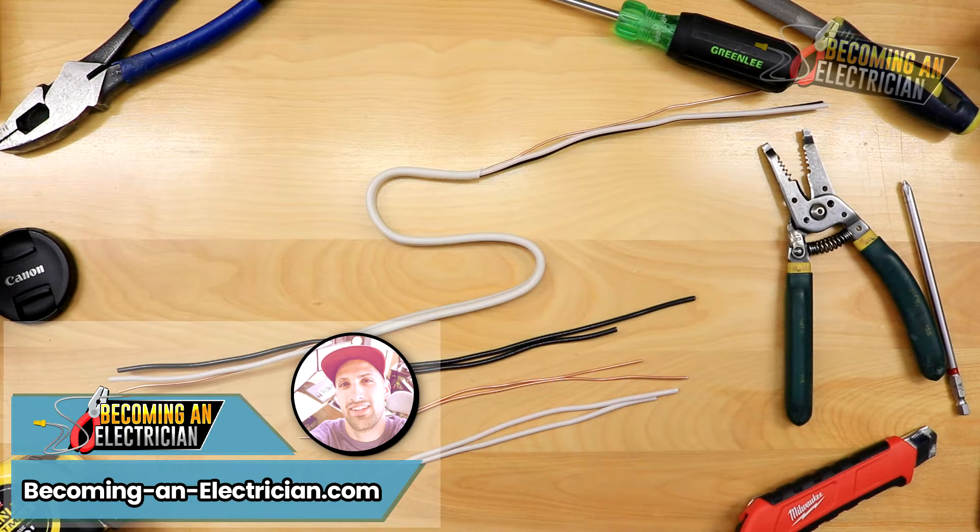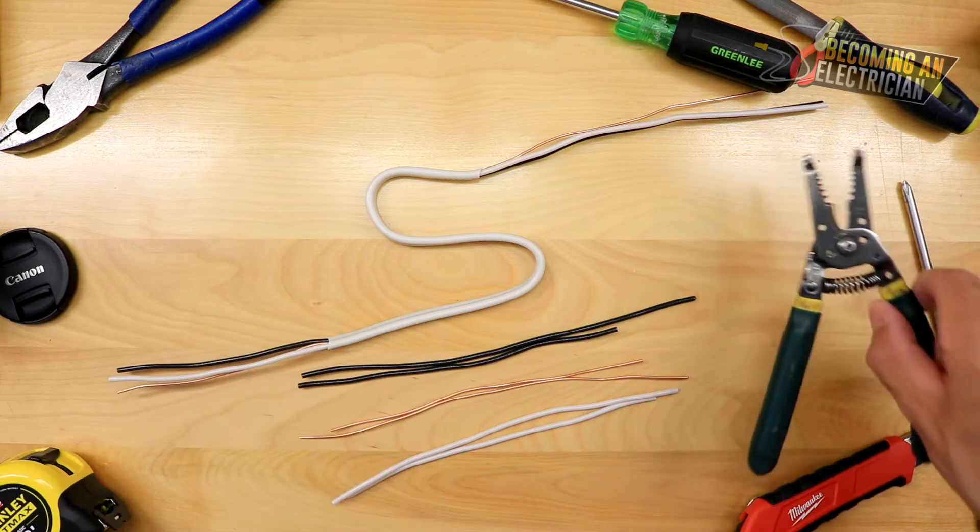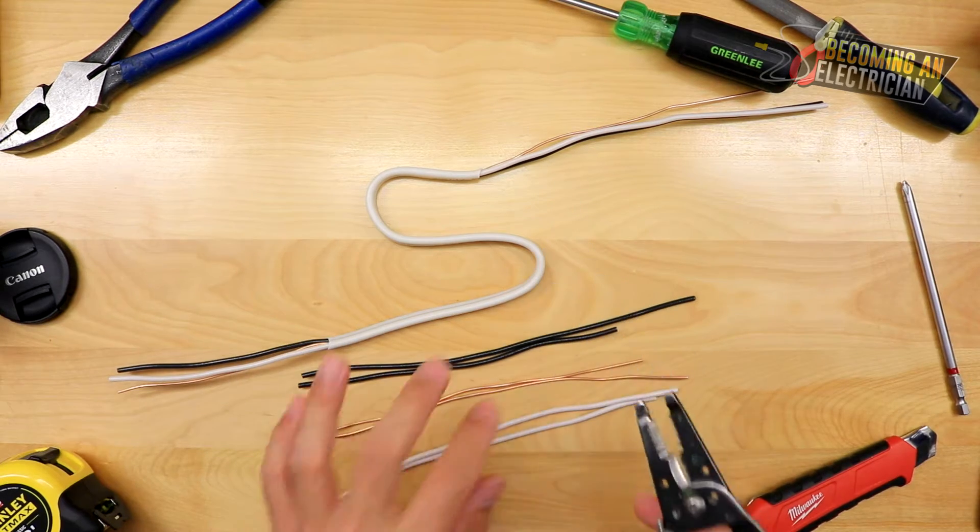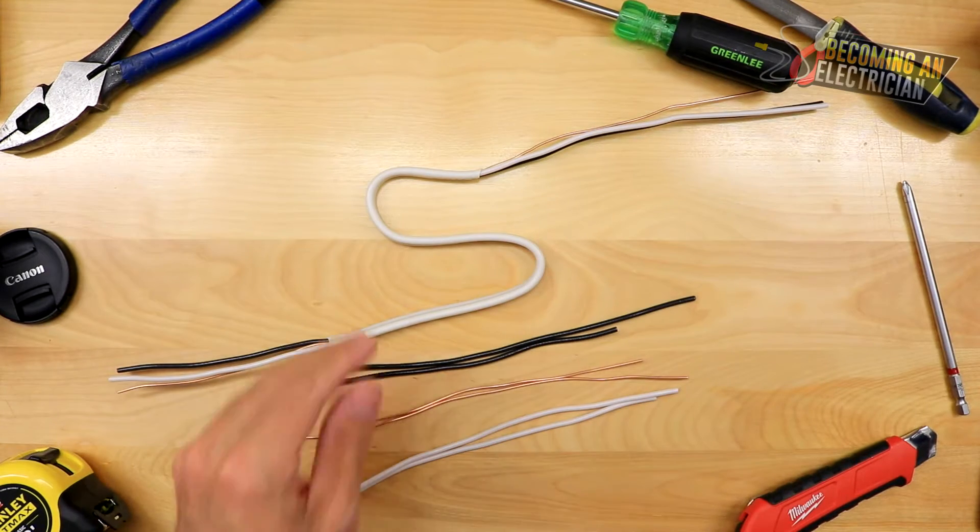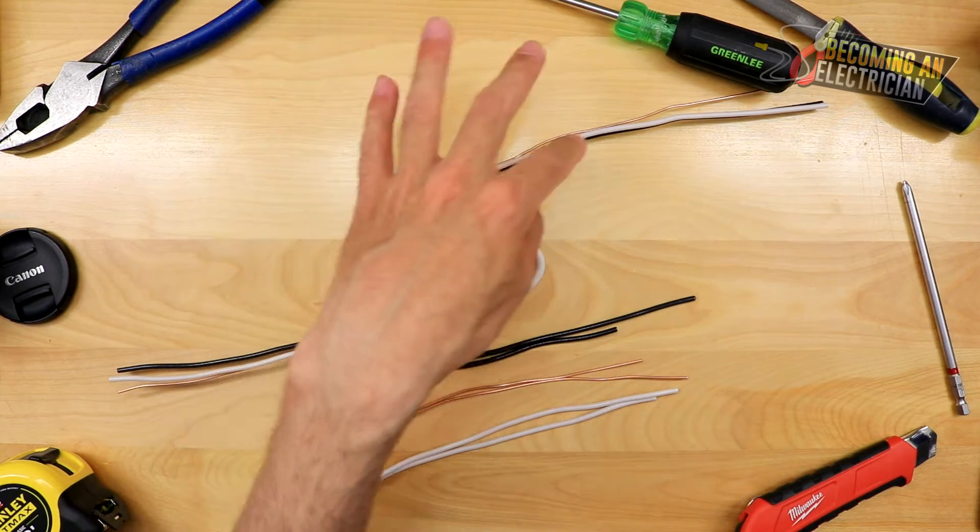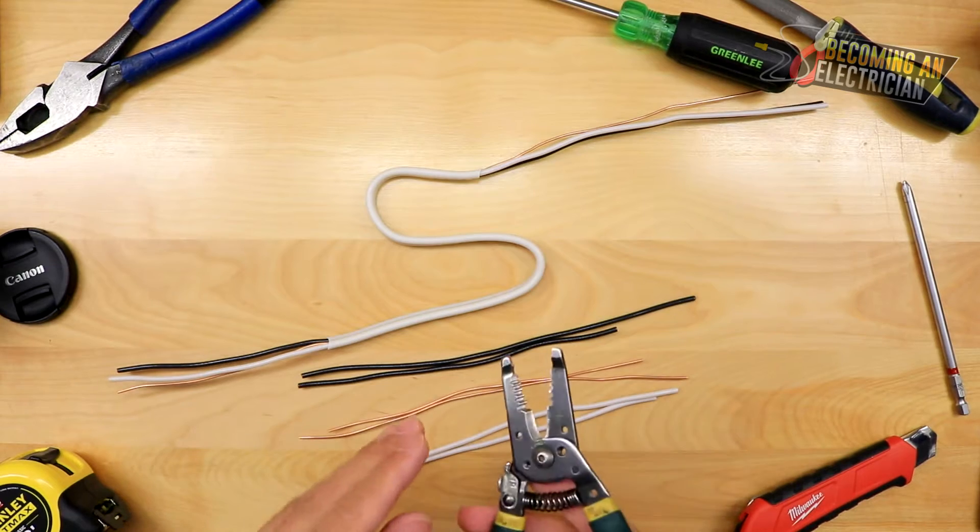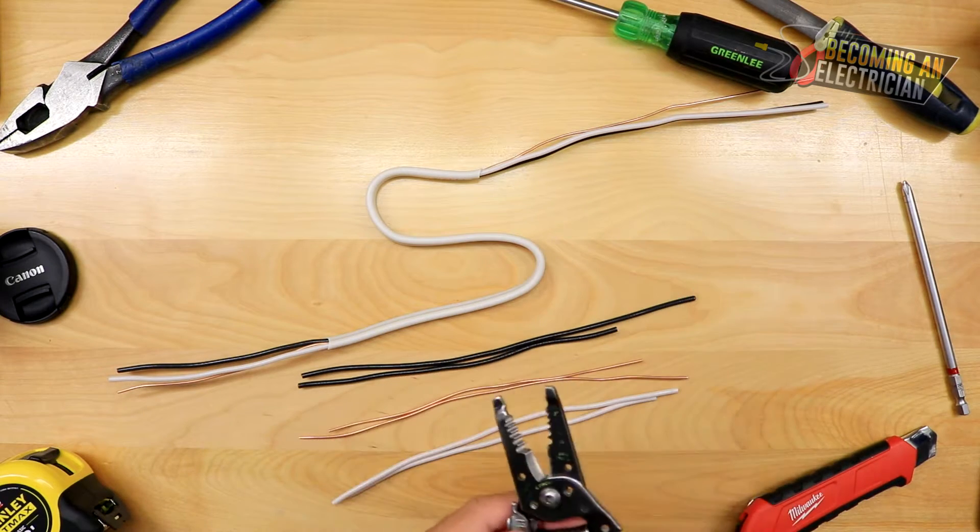All right, hey everyone, Riley here for becoming an electrician.com. In this video I want to talk to you about stripping single conductor with your wire strippers. In the last video I talked about how to strip the jacket off of your wire, but when it comes to actually stripping the single conductor, there's a lot of things I've seen apprentices do.